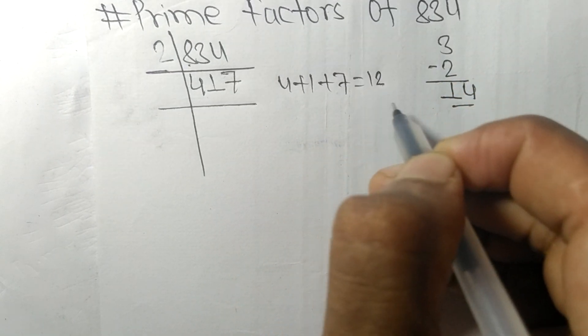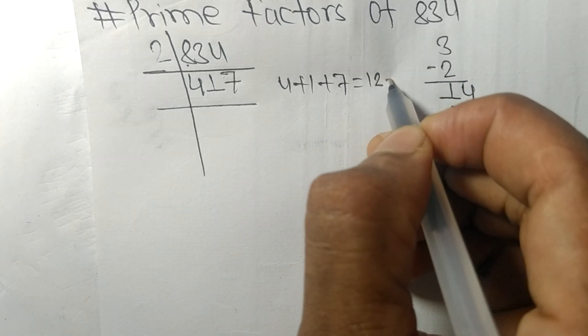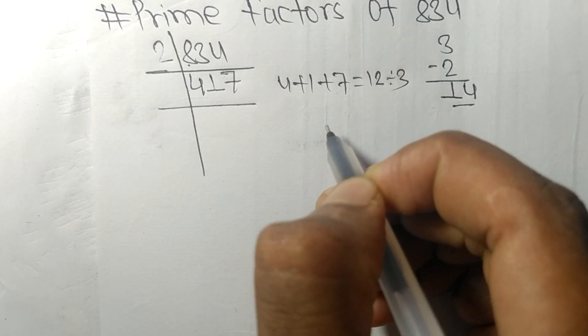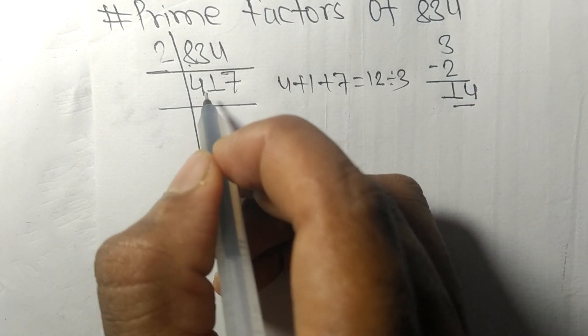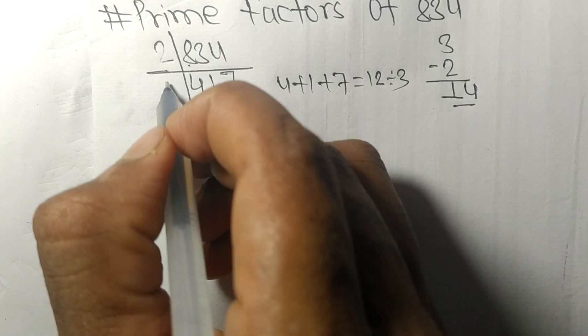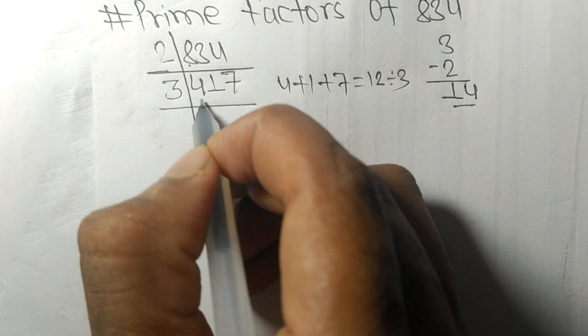And 12 is exactly divisible by 3, so 417 is also divisible by 3.